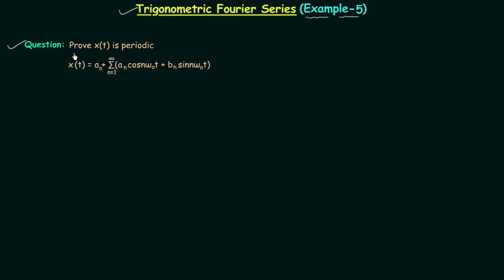According to the question we need to prove that Xt is a periodic signal. You can see the trigonometric Fourier series expansion of signal Xt, and we need to prove Xt is a periodic signal. We already know that Fourier series expansion is used for periodic signals only, so we are going to get a positive result, but I will show you how to prove that Xt is a periodic signal when you have this expansion.